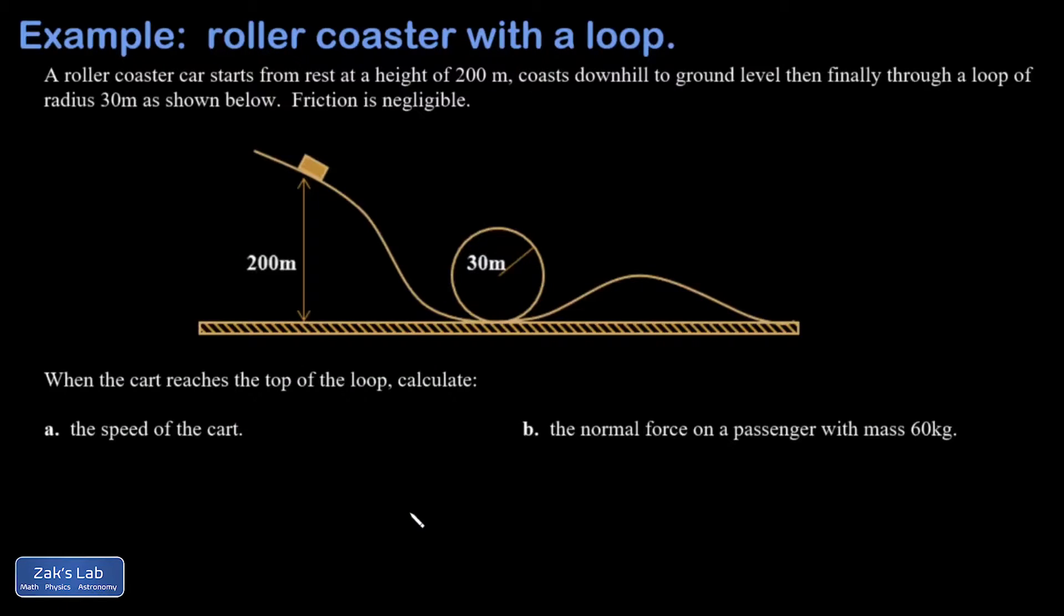In this problem, I've got a roller coaster starting from 200 meters high, and then it goes all the way down to ground level, and then goes through a loop, and then over a bump.